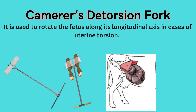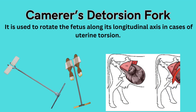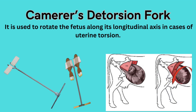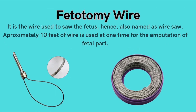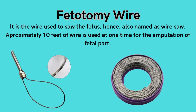Camera's detorsion fork: used to rotate the fetus along its longitudinal axis in cases of uterine torsion. Fetotomy wire: it is the wire used to saw the fetus, hence also named as wire saw. Approximately 10 feet of wire is used at one time for the amputation of a fetal part.